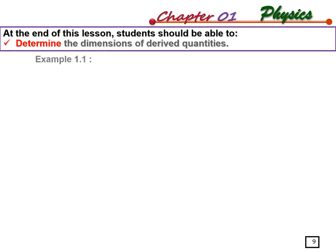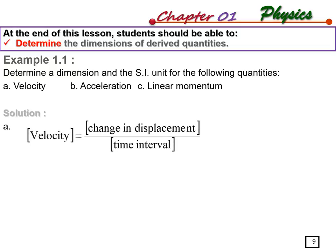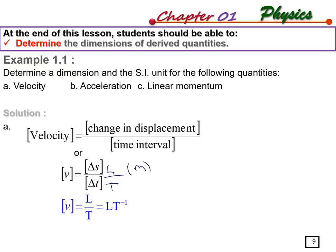For Example 1.1, we determine the dimension and SI unit of velocity. Velocity equals displacement over time, which is s over t. Displacement is measured in length L and time in T, so the dimension is L over T. Length is measured in meters and time in seconds, so the unit is meters per second.